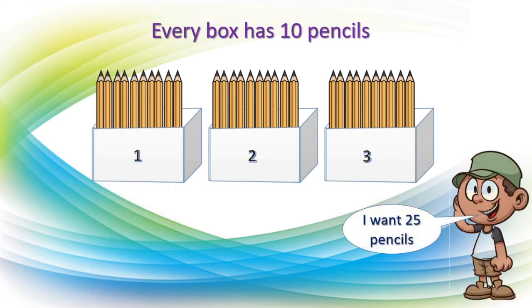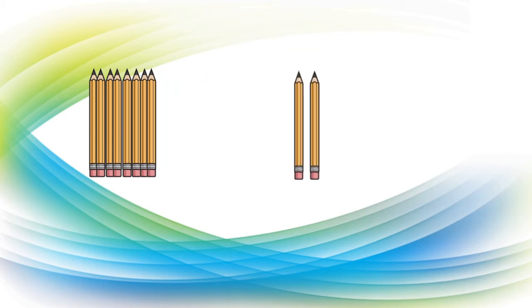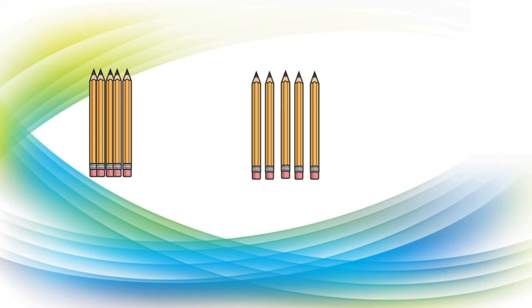One more example: this fourth boy needs 25 pencils from the three boxes. You know that 25 means 20 plus 5. We can give him two boxes — that is 20 pencils. Then from the third box, we have to give him 5 pencils. We take the third box aside and untie it, taking out all 10 pencils. Now we count 5 pencils: 1st, 2nd, 3rd, 4th, and 5th. We combine these 5 pencils with the 2 boxes, making 25 pencils.